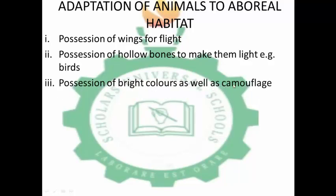Possession of bright colors as well as camouflage — animals in their habitat may be very brightly colored. This bright coloration is for camouflage, meaning they hide from either their prey or their predator. They mix with the environment they are in so that they are not detected by their prey or predator.